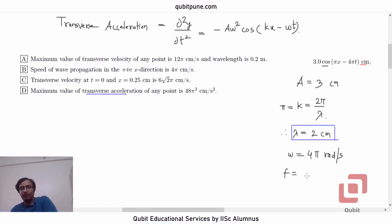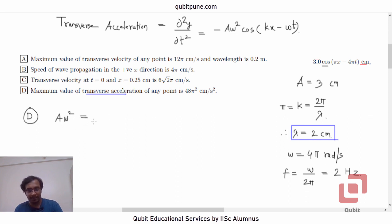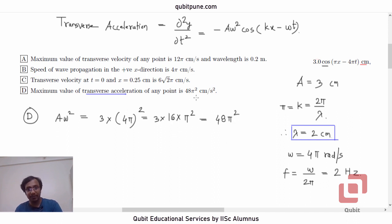Option D says maximum transverse acceleration is 48π² cm/s². We calculate Aω²: A = 3 cm, ω = 4π, so ω² = 16π². Therefore Aω² = 3 × 16π² = 48π² cm/s². The units check out — amplitude in centimeters, ω² in per second squared. Option D is correct.